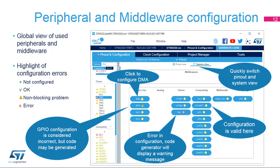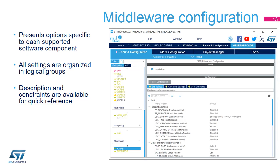Critical errors are represented by a red X and the configuration must be modified to continue. To add more peripherals and components, return to the pinout tab. Each middleware software component has options that are different, but they are all presented in a similar fashion, giving easy access to initialization options and providing informative descriptions.